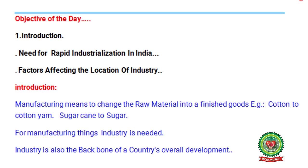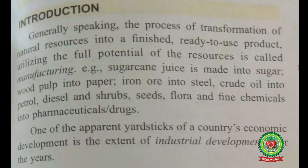Today's objective is the introduction and need for rapid industrialization in India, and we will discuss the main points for factors affecting the location of an industry. Manufacturing means to change raw materials into finished goods — for example, cotton to cotton yarn, and sugar cane to sugar. Industry is needed for manufacturing things and is also the backbone of a country's overall development.